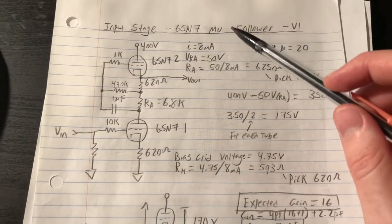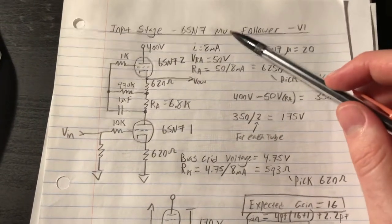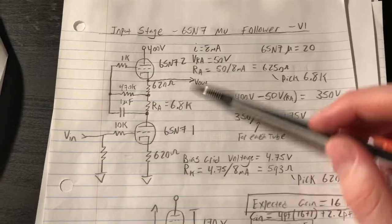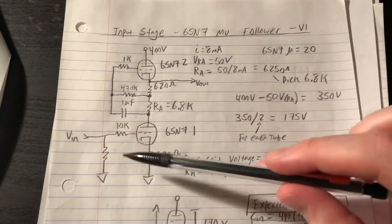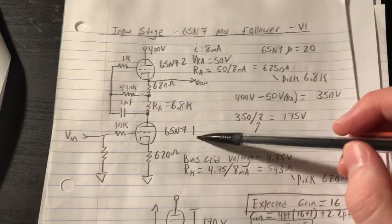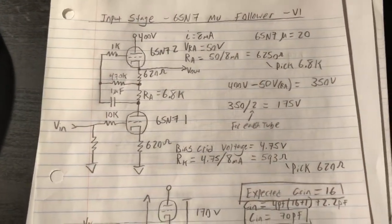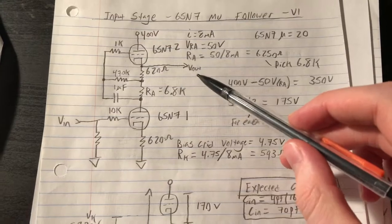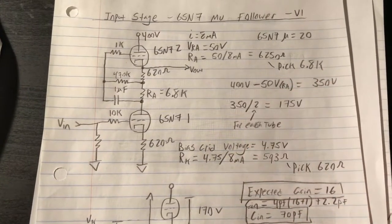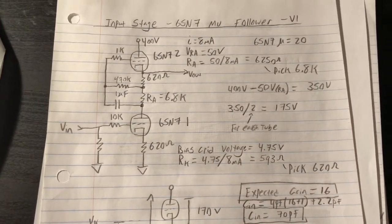It's called a mu follower because mu, which is the amplification factor parameter of a vacuum tube, is essentially met from input to output. So for example, a 6SN7 has an amplification factor of 20. From V in to V out, if this is working perfectly with zero losses, we should get a gain of exactly 20.